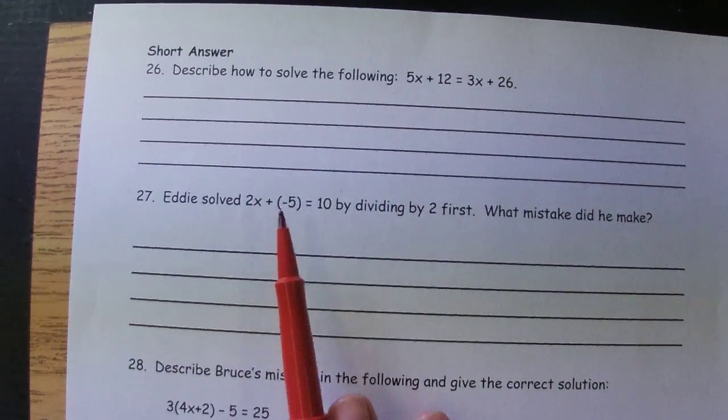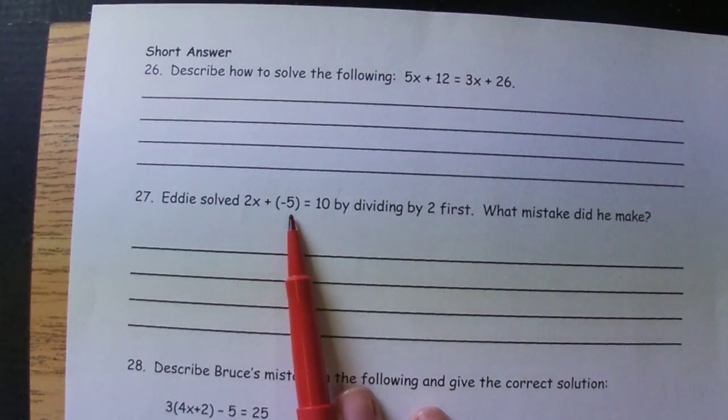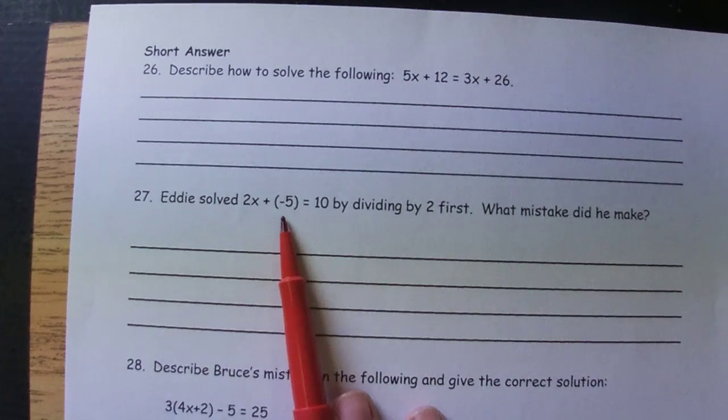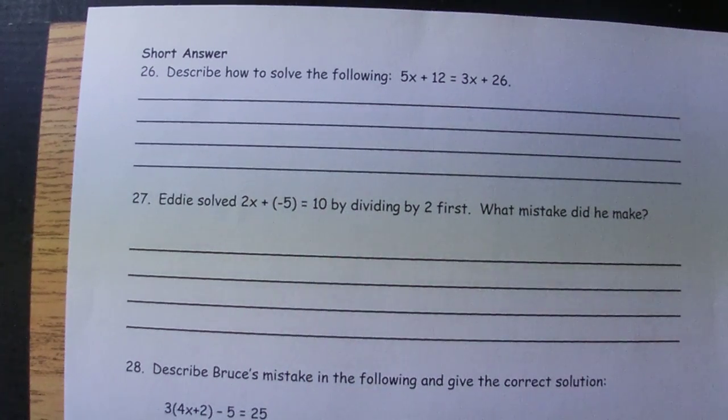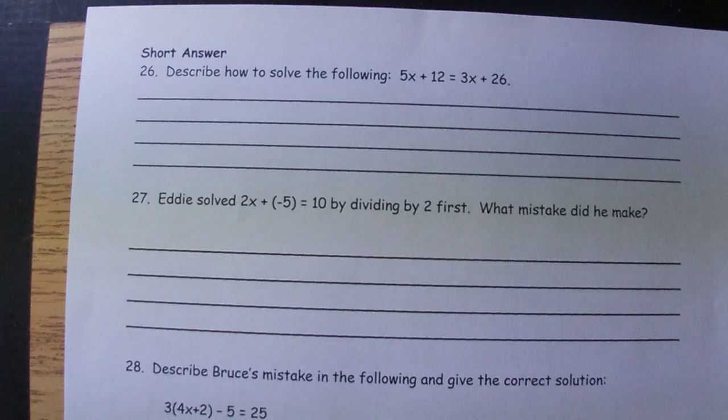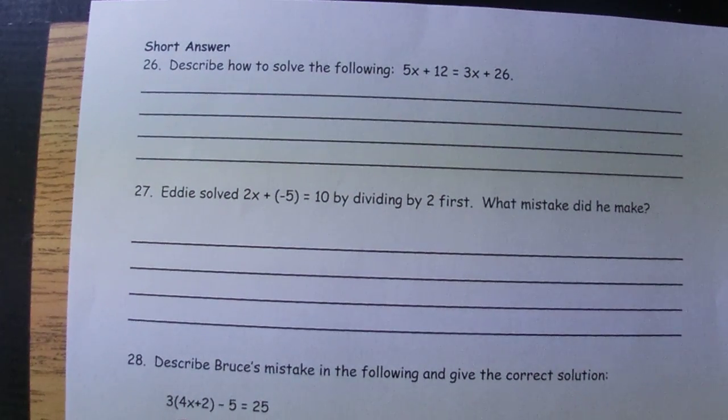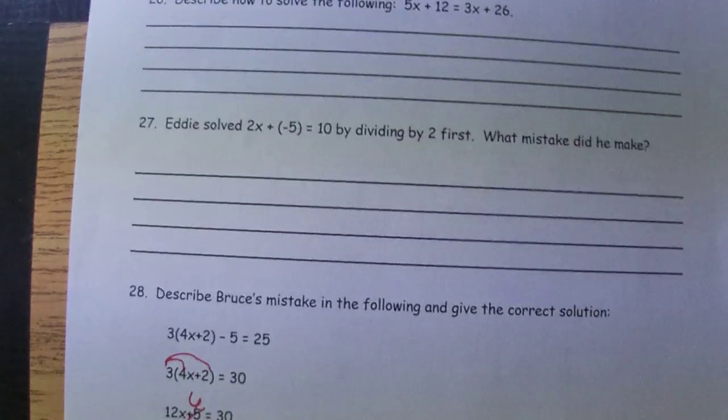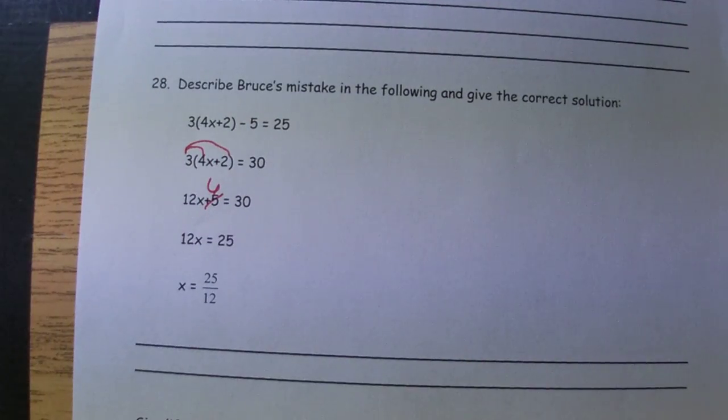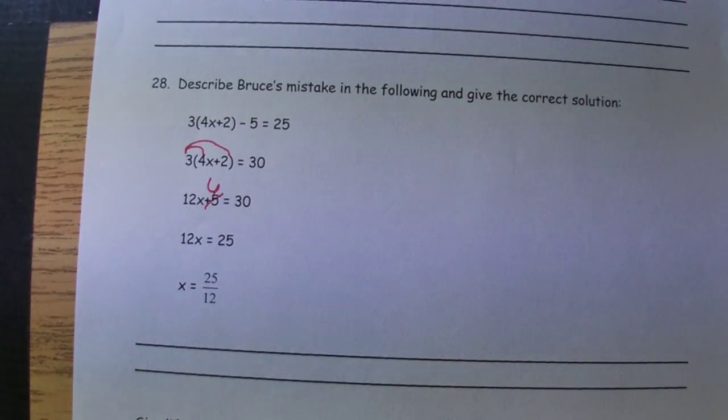27, we should be talking about the fact that you should have moved the negative 5 first, because we do order of operations backwards, and so that's what we need to do first. 28, we should be talking about the fact that right here when we distribute, this should be a 6, and then correcting that math. And 29 and 30, we went over in class completely. All right. Thank you.